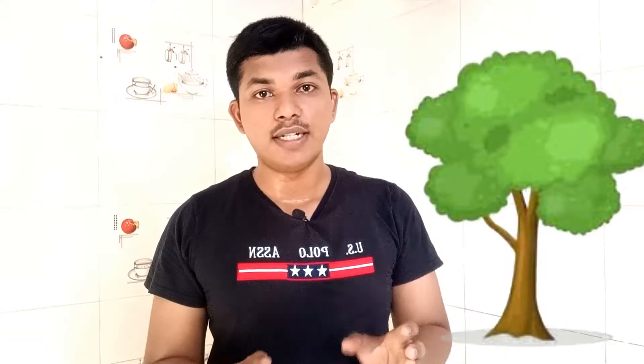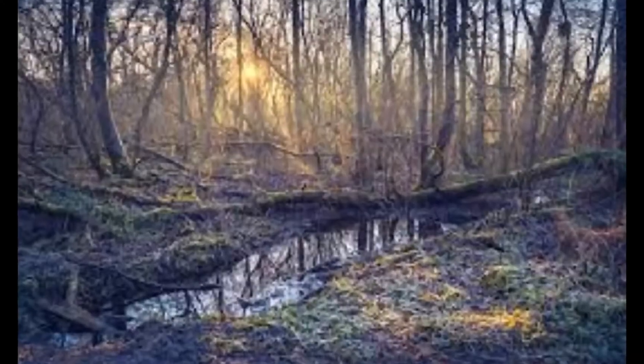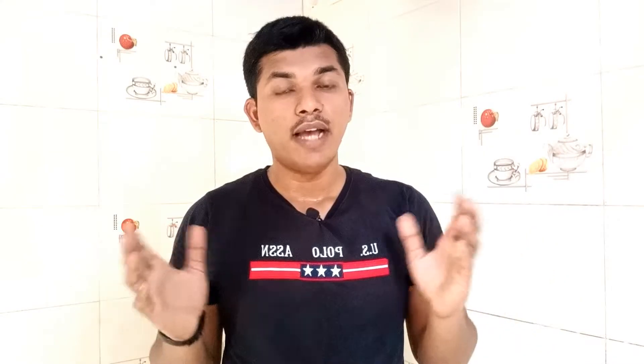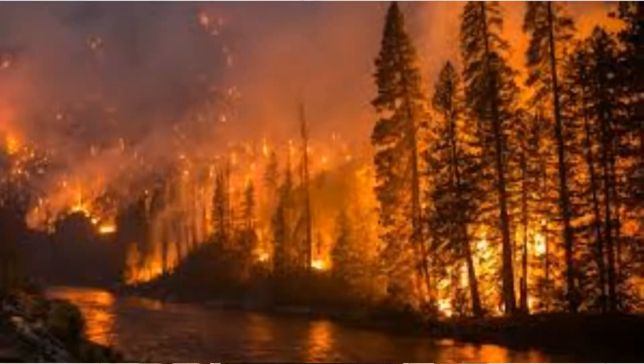Forest fire happens in two ways: natural causes and human error. When a tree present in the forest gets old, it dies and becomes dry due to the surrounding temperature. When the wind blows, the trees rub against each other, and due to friction a heat is generated. This heat is one of the root causes of forest fire.